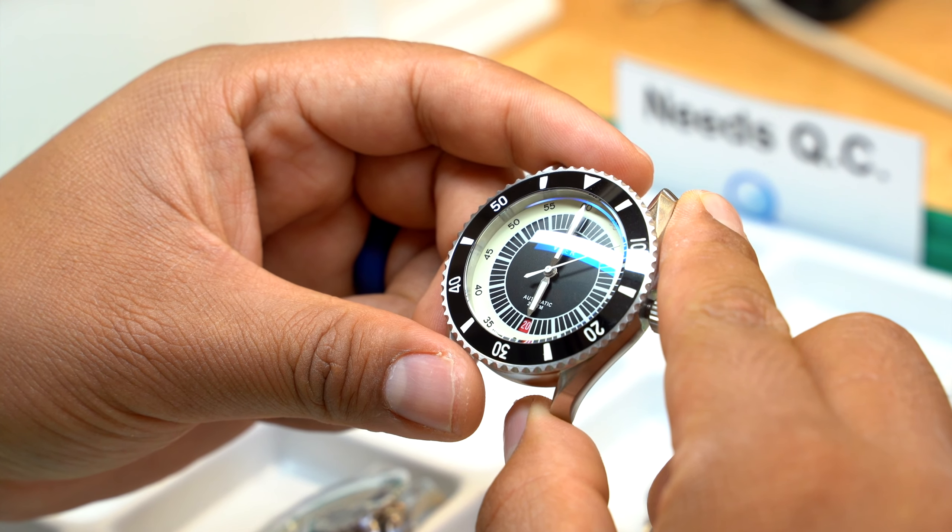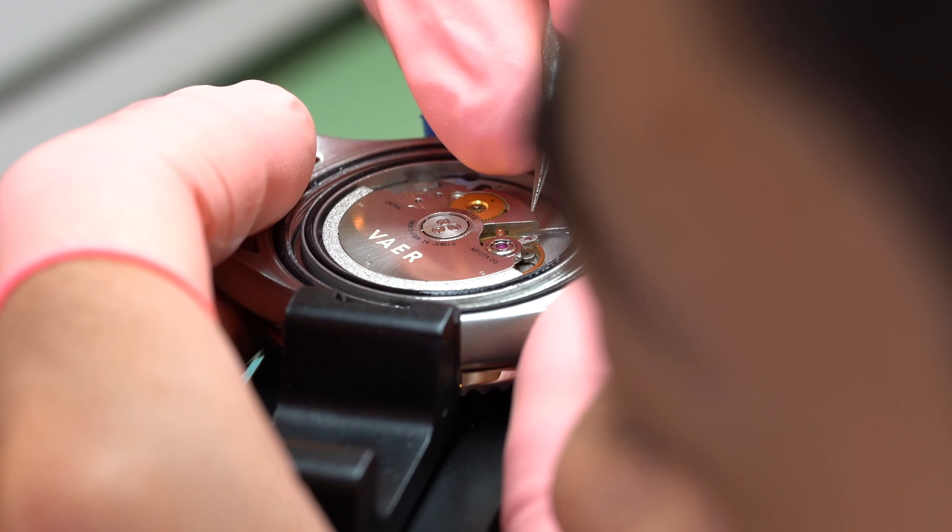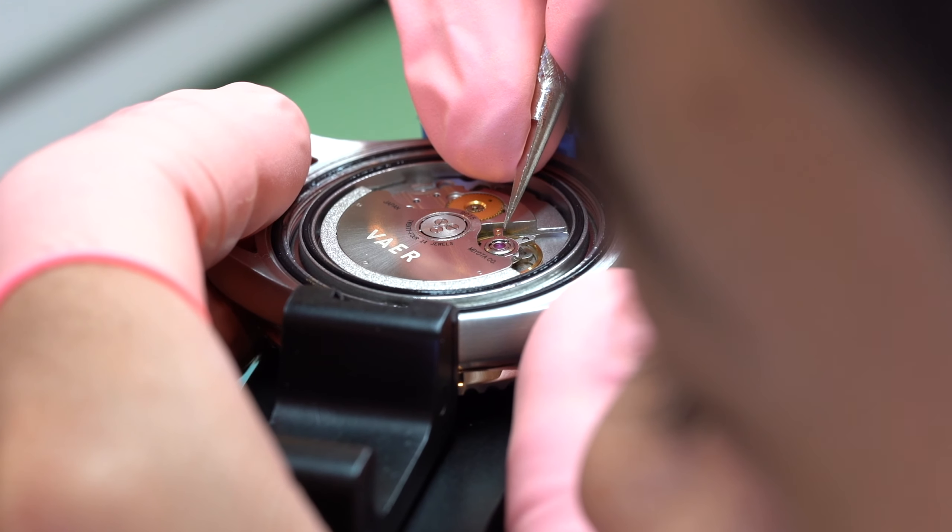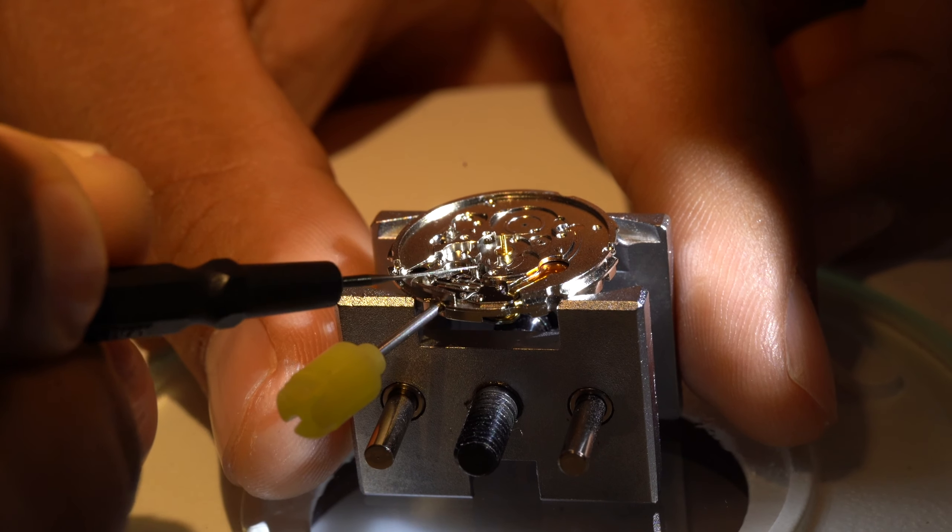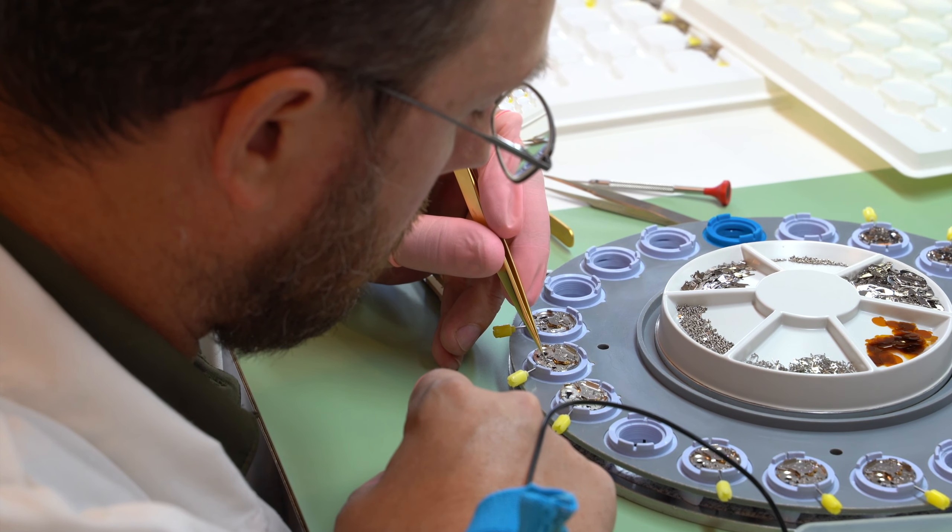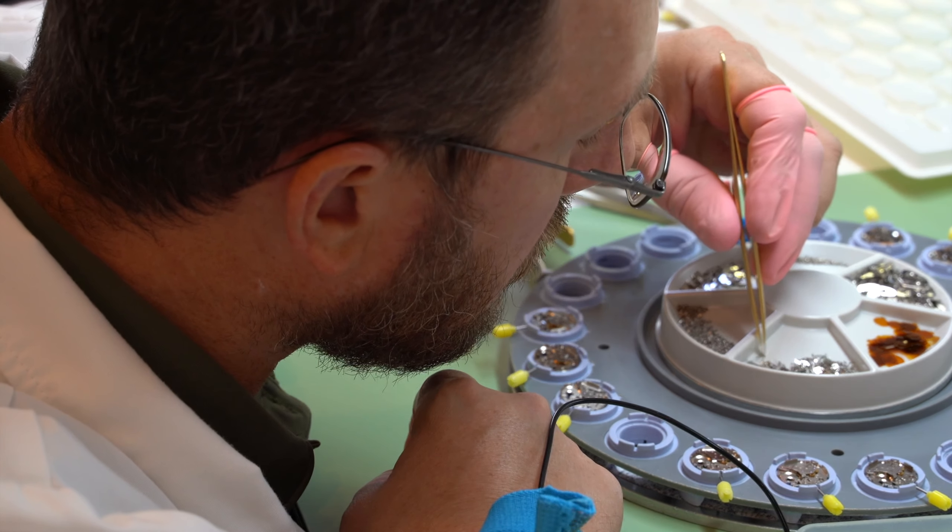Before we get started, one thing to make mention of is that most clips in this video are going to be of our D5 USA diver, which is an automatic watch using a Japanese-made Miyota movement. Just keep that in mind as this watch is an automatic, so the steps involved will be slightly different than for our C3 and C5 quartz wristwatches. For the most part though, this is a great overview of what assembly of a Veyr watch looks like.